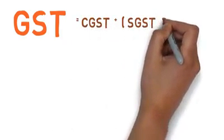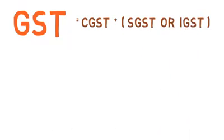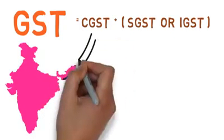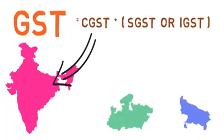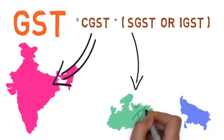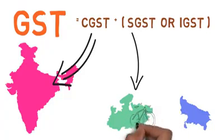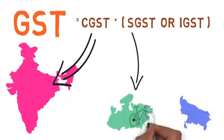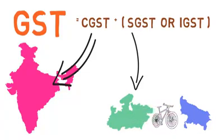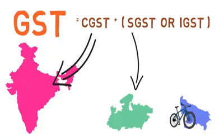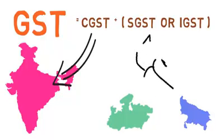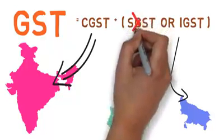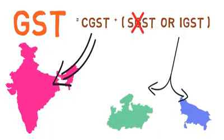GST is a combination of CGST and SGST, or IGST. CGST is Central GST which is paid to the central government. SGST is State GST which is paid to the state government. IGST is Integrated GST which applies when goods and services move interstate — for example, if a product is manufactured in Madhya Pradesh and sold in Uttar Pradesh, IGST is distributed between both states and SGST will not be collected.